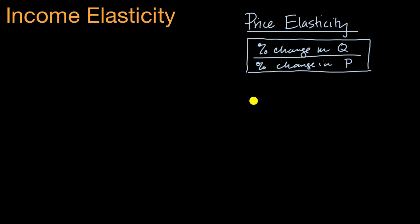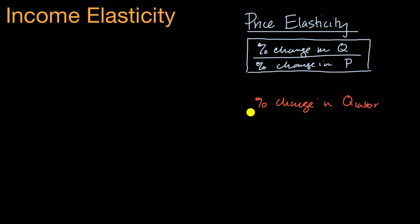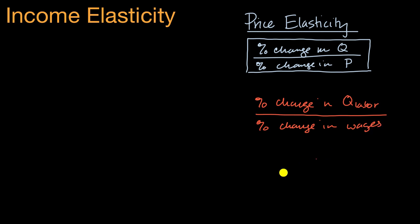For example, you could look at the percent change in labor supply — so quantity of labor — divided by our percent change in wages. You could view that as our percent change in the price of labor. So this is just a price elasticity of supply being particular to the labor market.